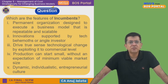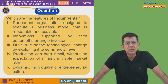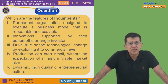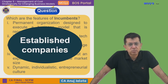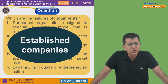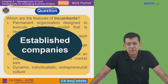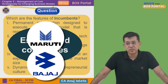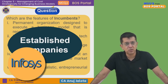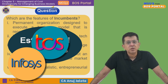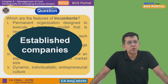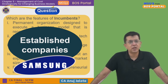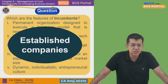So what are the features of incumbents? Incumbents means established companies — those who have been in business for very long. In the auto sector you have Bajaj and Maruti; in technology you have Infosys and TCS; in phones you have Apple and Samsung. There are two conflicting terms here: incumbents and startups.